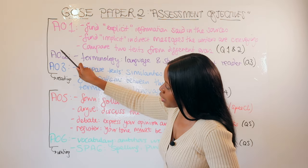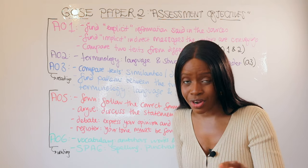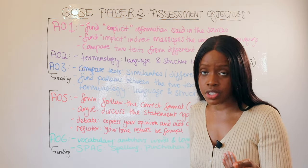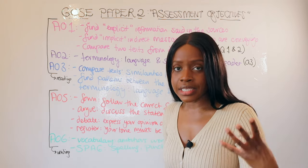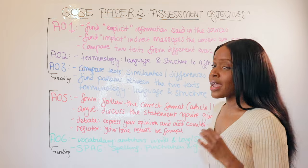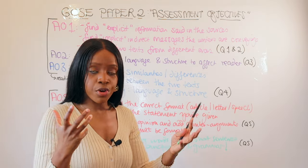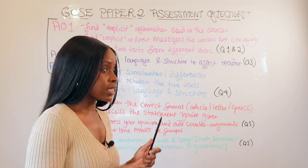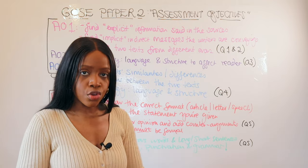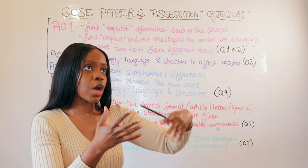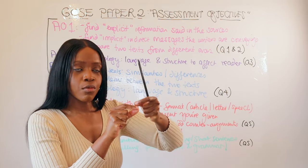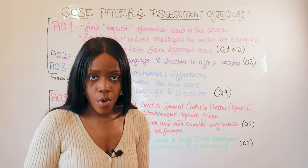The AOs are AO1, AO2, AO3, AO5 and AO6. Section A tests AO1, AO2 and AO3 — these are the two extracts you read and write responses for in questions 1 to 4. Section B, where you argue for or against a statement, tests AO5 and AO6. AO1 is tested in question 1 (multiple choice) and question 2 (the summary). Simply put, AO1 means: are you able to find explicit, obvious information stated in the sources? For instance, if the writer says 'I find sleeplessness really difficult,' quoting that is AO1 — it's very obvious, explicit information.